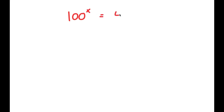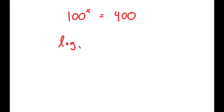In this video, I'm going to solve the equation 100 to the power of x is equal to 400. To solve this, I'm going to first start by taking the log of base 100 on both sides. So I get log base 100 of 100 to the power of x is equal to log base 100 of 400.